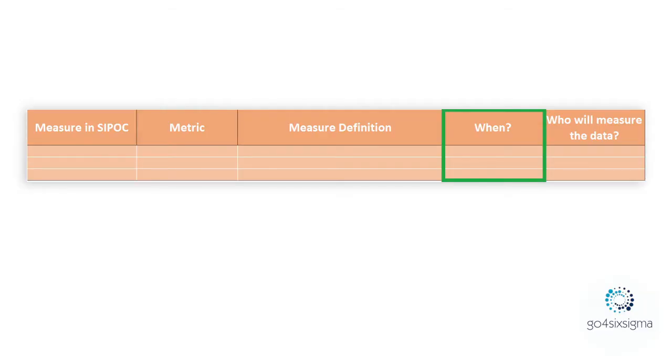At the same time, check the project charter again — everything is connected. The objectives from the project charter are connected with the data collection plan. Now you know you are measuring the process in time, and the definition specifies the time spent per one pizza preparation in a specific restaurant during a specific period. The next column is about 'when' — what time period you will collect data from.